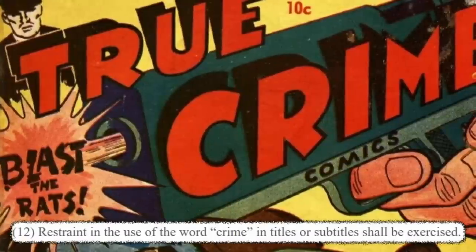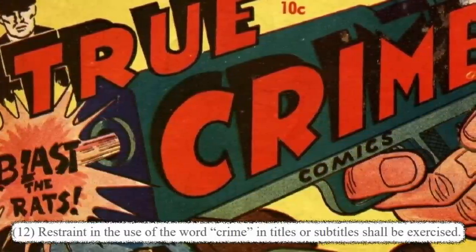Rule twelve: restraint in the use of the word 'crime' in titles or subtitles shall be exercised — so not only can it not be large or alone, but could you maybe just not use it at all? General Standards Part B — we're coming for horror now. At this period in history, the superhero genre had really declined post-war, so all the other genres were doing a lot better. After these rules hit, you can see how restrictive they are towards those other genres, which paved space for the rise of the superhero yet again, because superheroes are easier to work with in these rules.